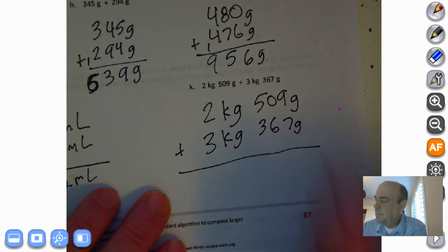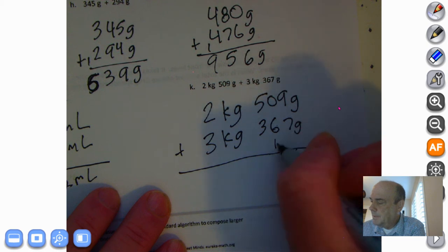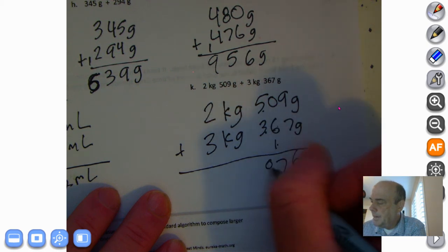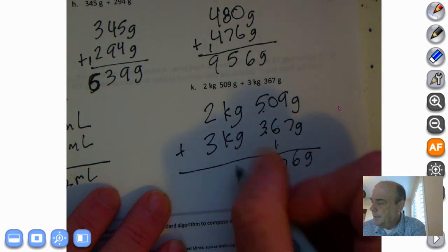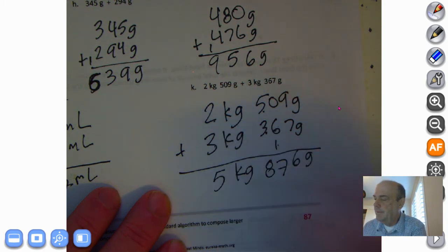First thing we're going to do is bring down the grams. 9 plus 7 grams is 16 grams. 60 grams plus 10 grams is 70 grams. 500 grams plus 300 grams is 800 grams. Bring down the kilograms and we got 2 plus 3 kilograms is 5 kilograms. And there's our answer.